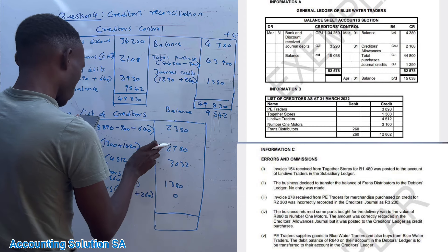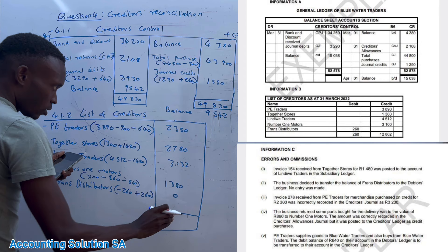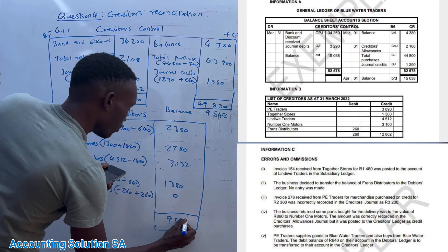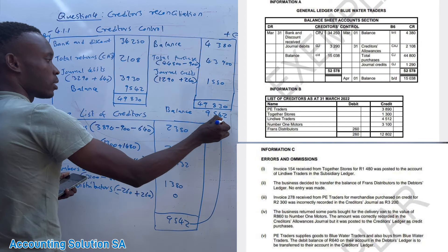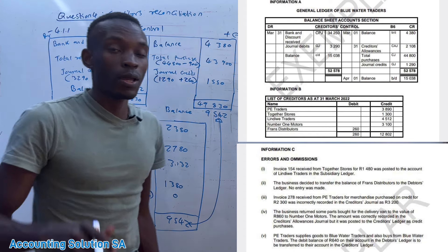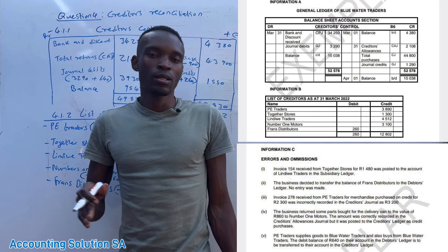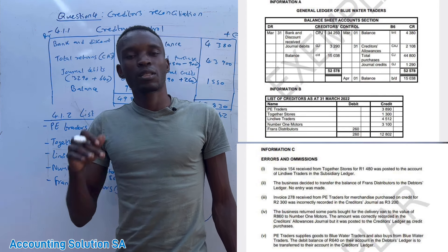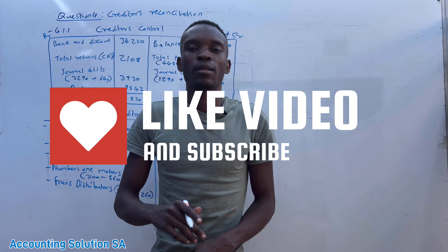The creditors list total is also 9,542 — it matches the creditors control balance, confirming the reconciliation is complete. The two totals must be the same. I hope you learned something. Please subscribe to this channel. Those who want to join our extra class, join us — it's only 600 per month. Enjoy the other videos on this channel.